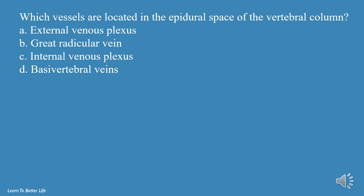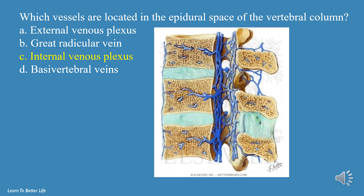Which vessels are located in the epidural space of the vertebral column? a. External Venous Plexus, b. Great Radicular Vein, c. Internal Venous Plexus, d. Basivertebral Veins. The answer is c, Internal Venous Plexus.